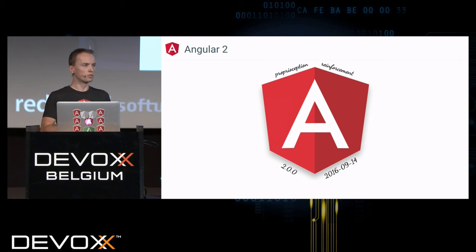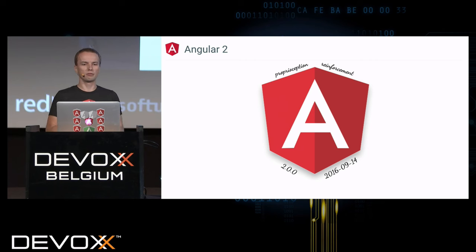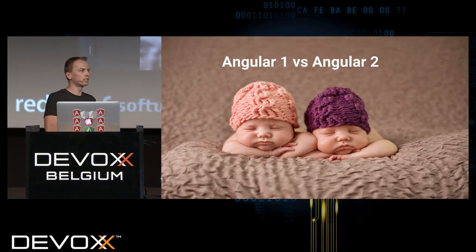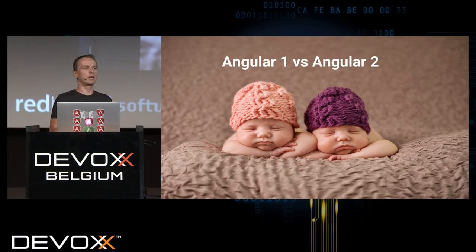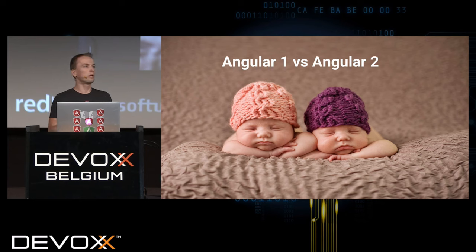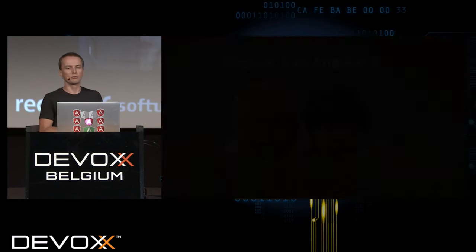We took all of these changing requirements and built Angular 2. We released it about six or seven weeks ago, so it's relatively fresh. One of the first questions we get is: what's the difference between Angular 1 and Angular 2? The core principles are the same — helping developers build awesome applications, making developers productive, and guiding them to build in the right way. How this is done is quite different between the two frameworks.